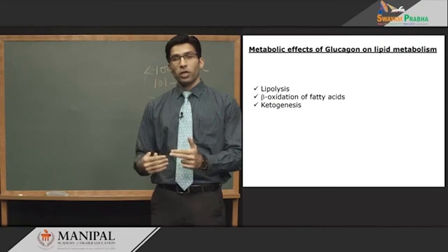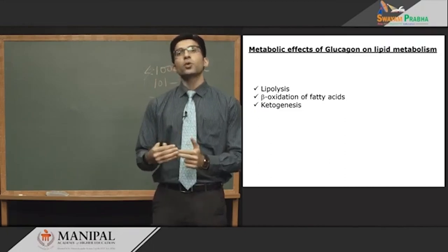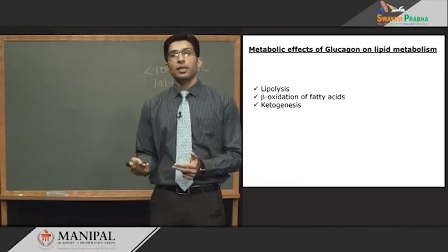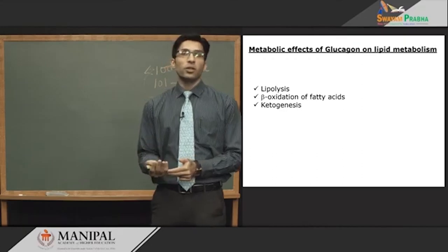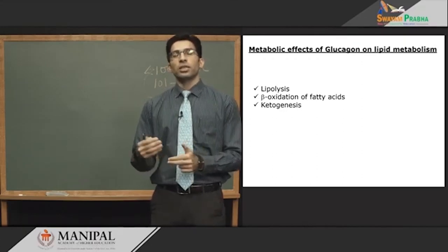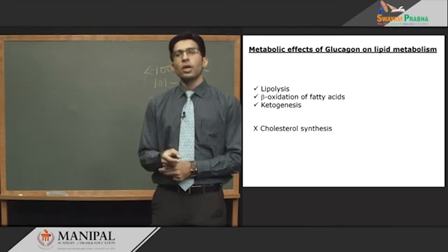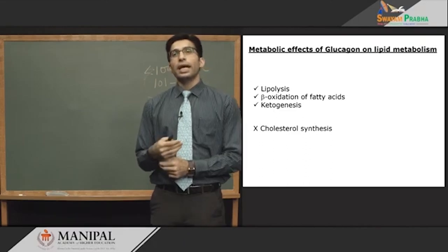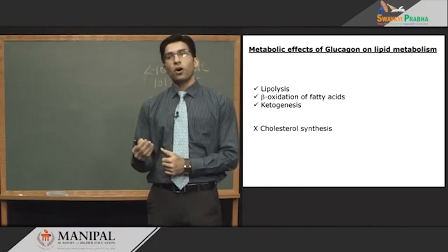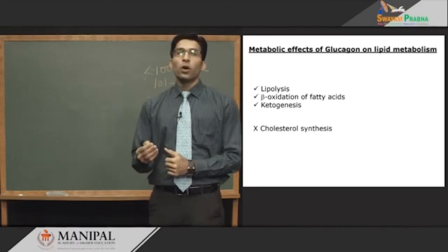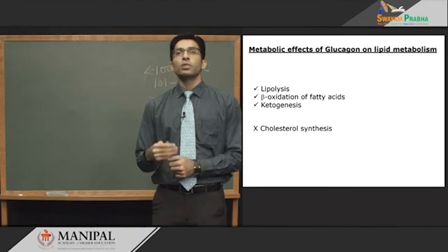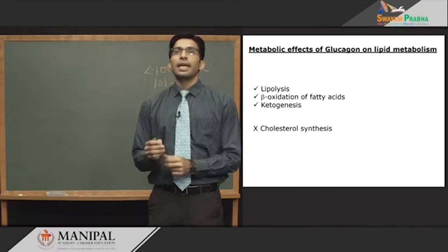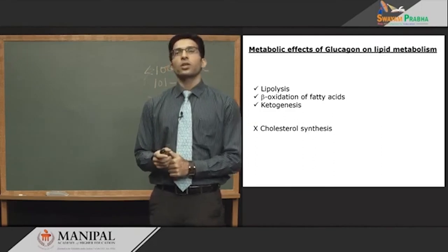In starvation, ketone bodies can be utilized by the brain because there is no other energy source. But in diabetes, the person is eating well but insulin is not there, so ketone bodies utilization does not come into picture in the beginning phase of diabetes. Glucagon also inhibits cholesterol synthesis: while insulin activates HMG-CoA reductase, glucagon inactivates this enzyme by phosphorylating it — the phosphorylated form of HMG-CoA reductase is inactive.